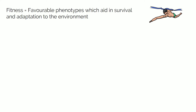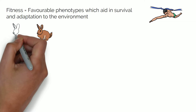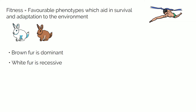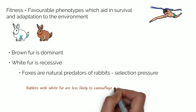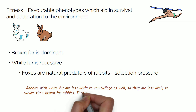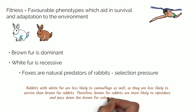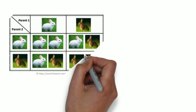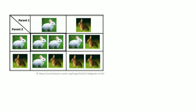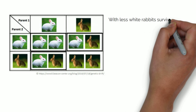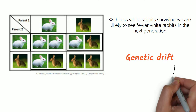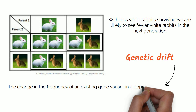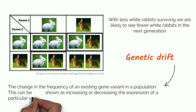These favourable phenotypes are often reflected as fitness — they possess traits which help them survive and adapt to the environment. For example, in rabbits there is variation in fur colour: brown fur is dominant and white fur is recessive. Foxes are natural predators of rabbits, providing the selection pressure. Rabbits with white fur are less able to camouflage, so they are less likely to survive than brown fur rabbits. Brown fur rabbits are therefore more likely to reproduce and pass down their colouring to offspring. With fewer white fur rabbits surviving, we are likely to see fewer white rabbits in the next generation. This is called genetic drift — the change in frequency of an existing gene variant in a population, shown as increasing or decreasing the expression of a particular variant over time.